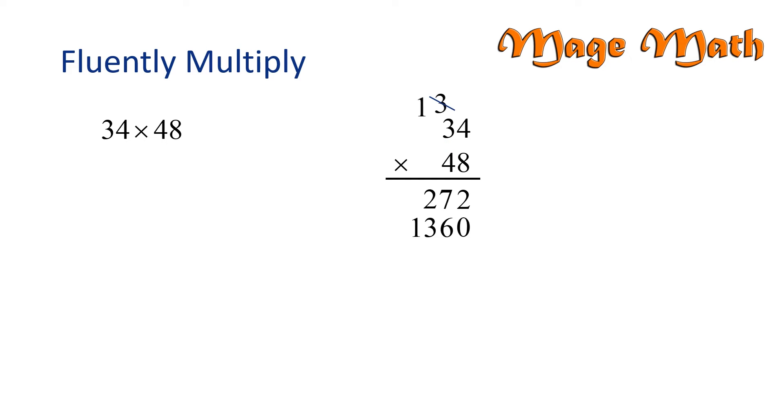Next, we're going to add two plus zero is two. Seven plus six is thirteen, but we need to carry the one. One plus two plus three is six. And then we'll just bring down the one. We found that thirty-four times forty-eight equals one thousand six hundred thirty-two.